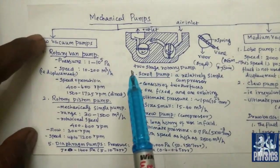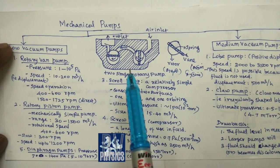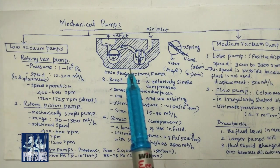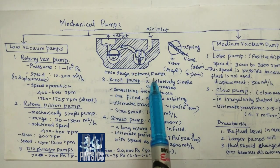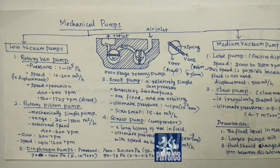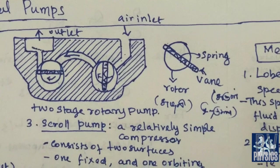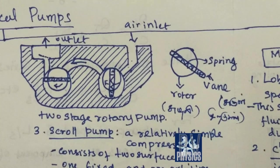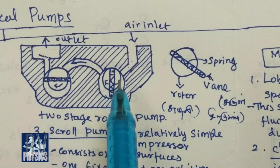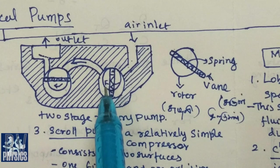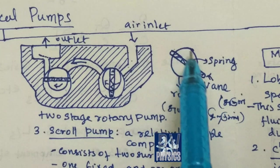Let's look at low vacuum pump. Let's look at the diagram. This is how the mechanical pump works. This is a two-stage rotary pump. Let's focus on this. This is a rotor.